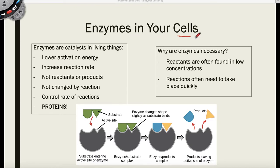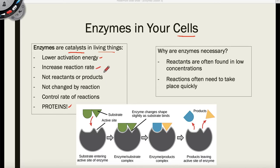Our cells have enzymes. Let's recap what enzymes do: enzymes are catalysts in living things, enzymes are proteins, they lower the activation energy, they increase the reaction rate to make reactions happen faster, they are not reactants or products, they are not changed by the reaction, and they control the rate — the speed — of the reaction.